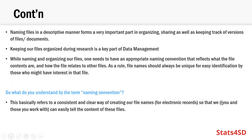Keeping our files organized is a key part of data management, because if they are not organized, how are you going to manage them? When organizing and naming our files, we should have an appropriate naming convention. The naming convention should reflect what the file contents are and how these files relate to other files. As a rule, the names you give to your files and documents should be unique for easy identification by those who might have interest in those files.